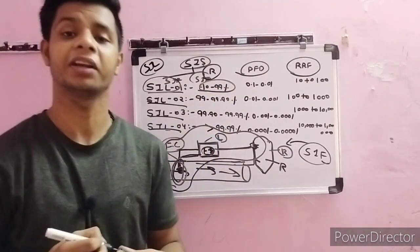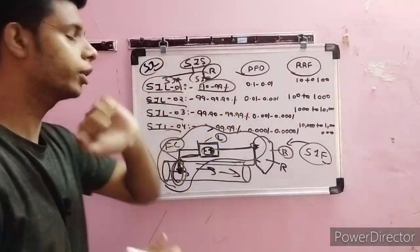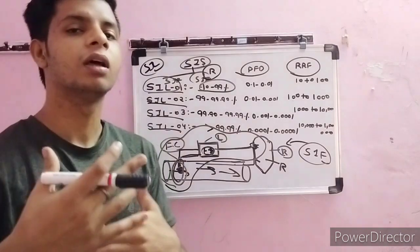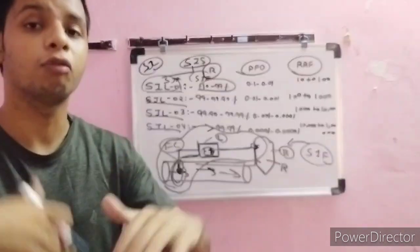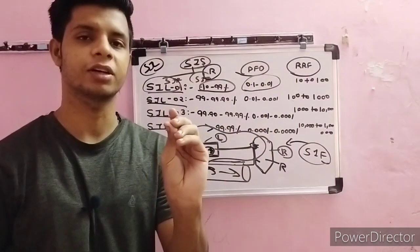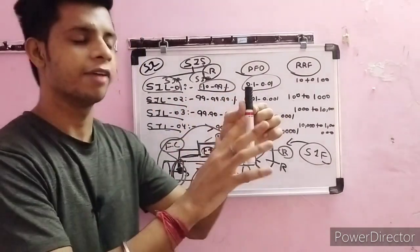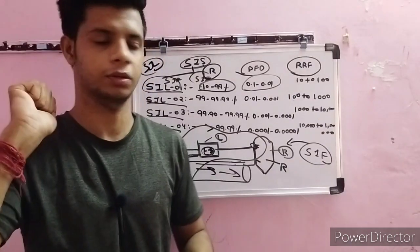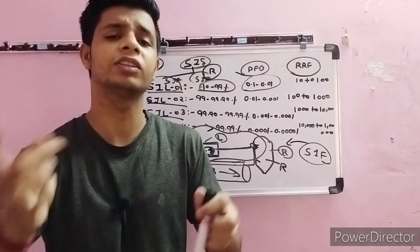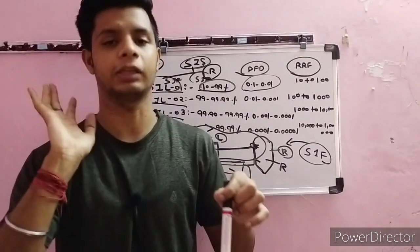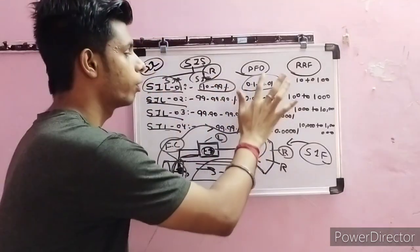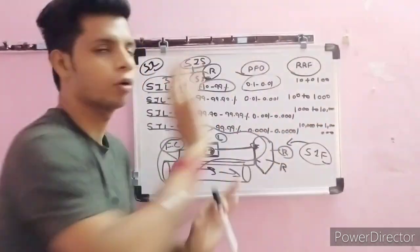For SIL 1, reliability is 90 to 99%. If any equipment is SIL 1 certified, it will work 90 to 99% of the time. If you are operating that device 100 times, the probability of failure on demand is 0.1 to 0.01% — meaning it may fail only 0.1 to 0.01% out of every 10 to 100 operations.